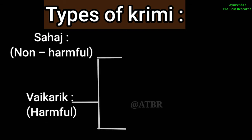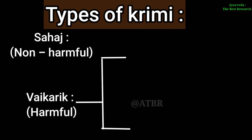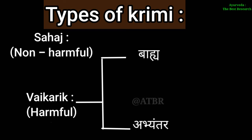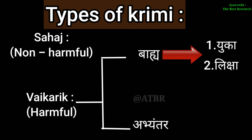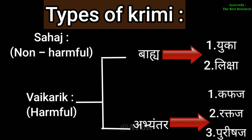Vaikarika Krumi are further divided into two types: Bhaiya and Abhyantara. Bhaiya Krumi are divided into two: Yuka and Liksha. Abhyantara Krumi are further divided into Kaphaja Krumi, forming at the site of Annavas Srotas; Raktaja Krumi, forming at the site of Rakta Srotas; and Purisha Krumi, forming at the site of Purisha Srotas. In all, the Krumis are of 20 types.